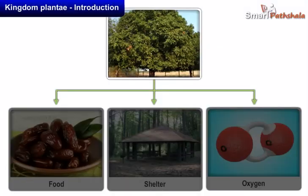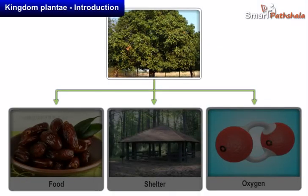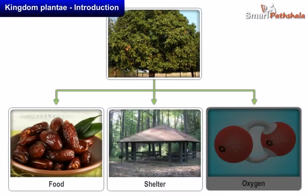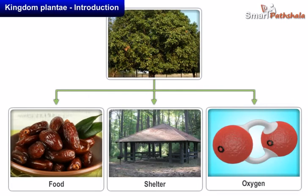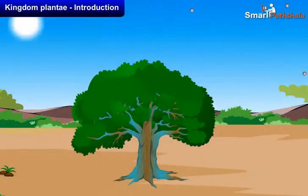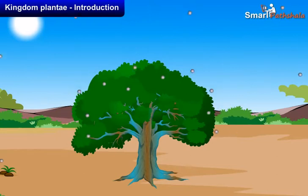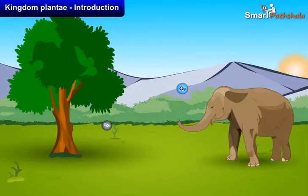We know that plants are essential for us. Plants give us food, shelter, and oxygen, which are important for surviving life on earth. Plants consume carbon dioxide from the atmosphere and maintain a right temperature for existing life on earth.